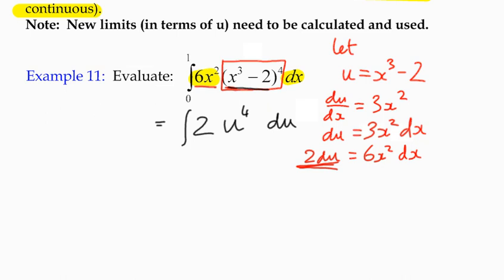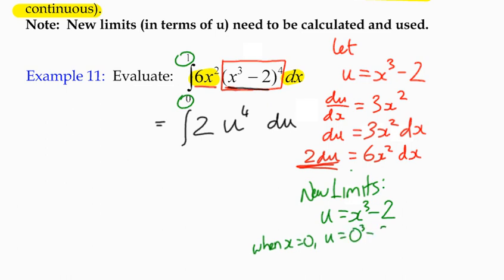So what I've got to do is do a little bit of extra work on finding the new limits. And it's fairly straightforward. So we've determined that u is equal to x cubed minus 2. So we're going to assume that these values 0 and 1 are values of x. In other words, when x equals 0, u is equal to 0 cubed minus 2. So u has a value negative 2. And when x equals 1, which is the upper limit here, u is equal to 1 cubed minus 2, which is negative 1.